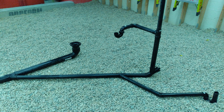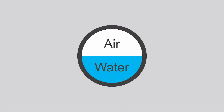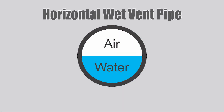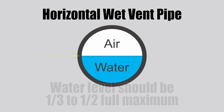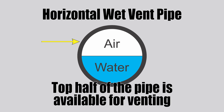We won't be sizing any wet vents in this video, but I'd like to show you the inside of a pipe that's being used in an adequately sized wet vent. You'll notice the water level should never come above the halfway point in the pipe, leaving the top half of the pipe available for actual venting.